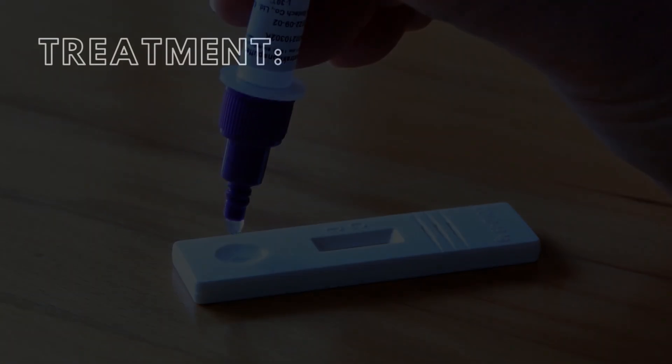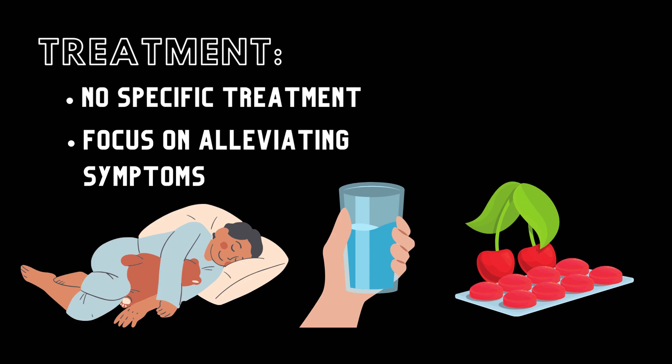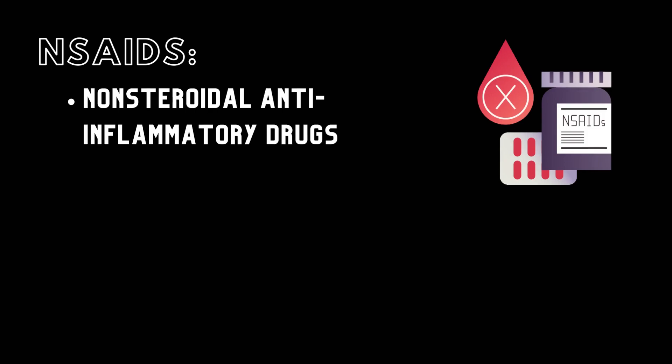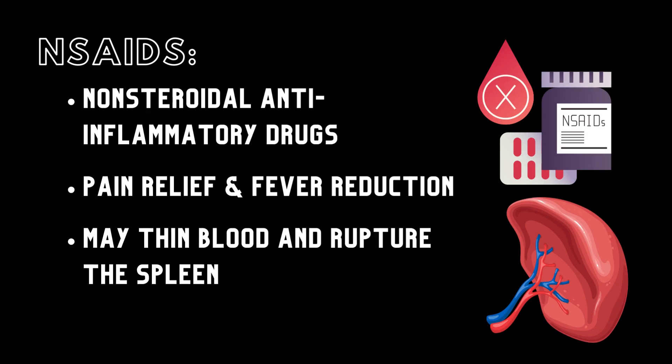Unfortunately, no antibiotics or antiviral drugs have been found to be effective in treating mononucleosis. Additionally, there is no inoculation against the disease, meaning treatment will typically involve attempting to alleviate the symptoms. Symptoms can be alleviated by prolonged rest, drinking plenty of fluids, lozenges, and avoiding physical activities such as sports, especially in cases with an enlarged spleen. It is also possible to take non-steroidal anti-inflammatory drugs, or NSAIDs. An important note: NSAIDs are commonly used for pain relief and fever reduction, but in cases of mononucleosis where an enlarged spleen is present, NSAIDs may thin the blood and cause a rupture of the spleen. Acetaminophen, or Tylenol, does not have the same blood thinning effects, making it a generally safer alternative.